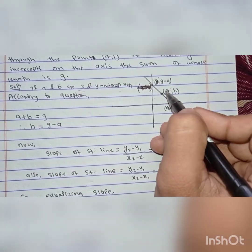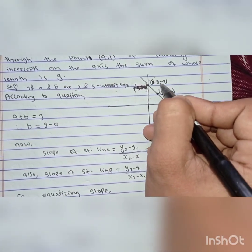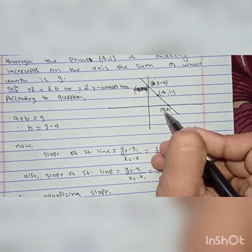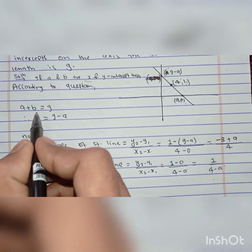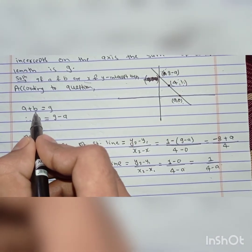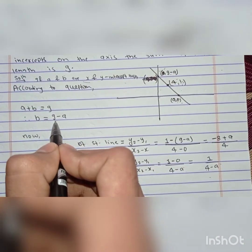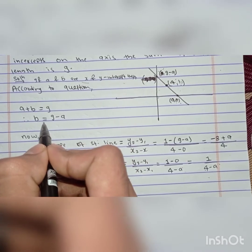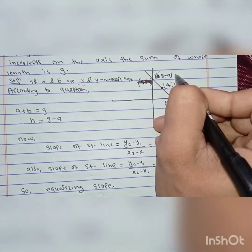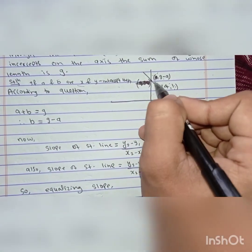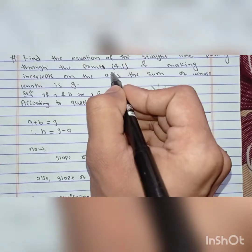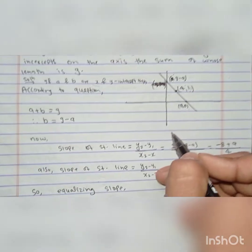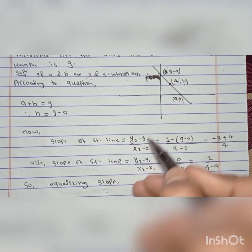If we call the x-intercept 'a' and the y-intercept 'b', then the coordinate on the y-axis is (0, b) and on the x-axis is (a, 0). According to the question, the sum of intercepts is 9, so b = 9 minus a. Therefore the coordinates become (0, 9-a) and (a, 0), and (4, 1) is our given point. Now we find the slope of the straight line.